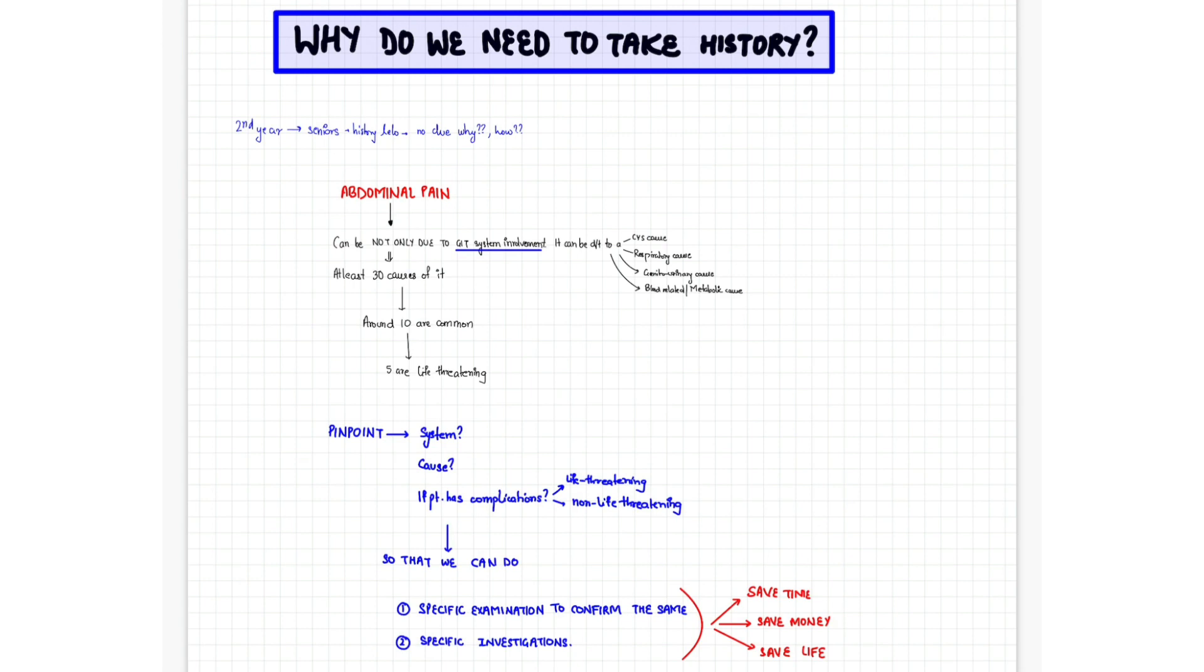These are the basic rules that we have to keep in mind while we are taking the history. Why are we asking this? So that when we go to the examination part we don't roam around all the systems. If on the history we have decided that the cause is probably respiratory, we will be going more towards the respiratory examination and focusing more on that.